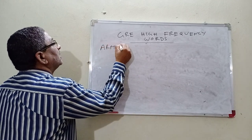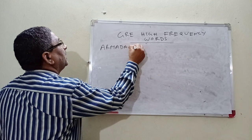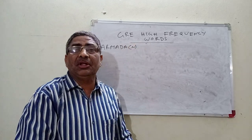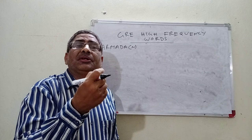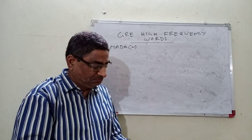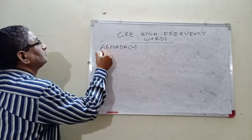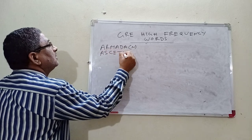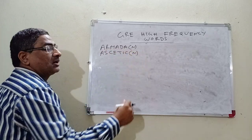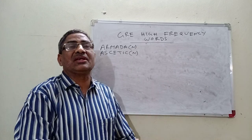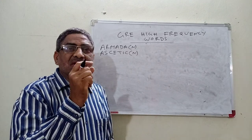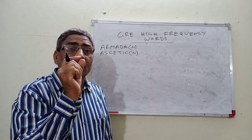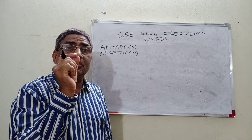Armada — it's a noun form. What is the meaning of armada? A fleet of warships. Next, Ascetic — what is the meaning of ascetic? One who leads a simple life without any luxury.